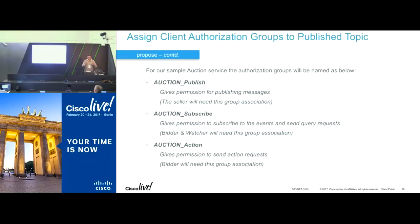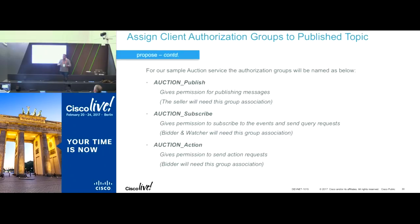As part of the Dynamic Topics feature, what the ISE backend system does when a topic gets approved is it creates authorizations around the topic actions. On a given topic, you can publish, subscribe, query, or take actions. What the PXGrid system does is it creates an auction publish authorization group. If an administrator selects a particular client and says he's part of this authorization group, that client can publish on the topic. Likewise, if the client is put in an auction subscribe authorization group, he can subscribe to the topic. If clients are not part of these authorization groups, they cannot take those particular actions.